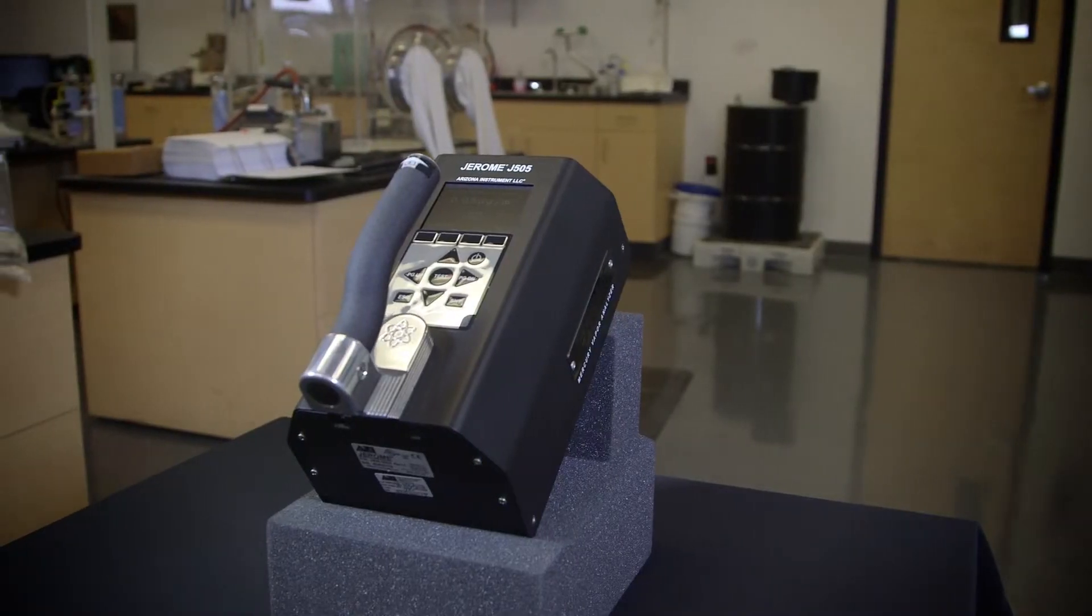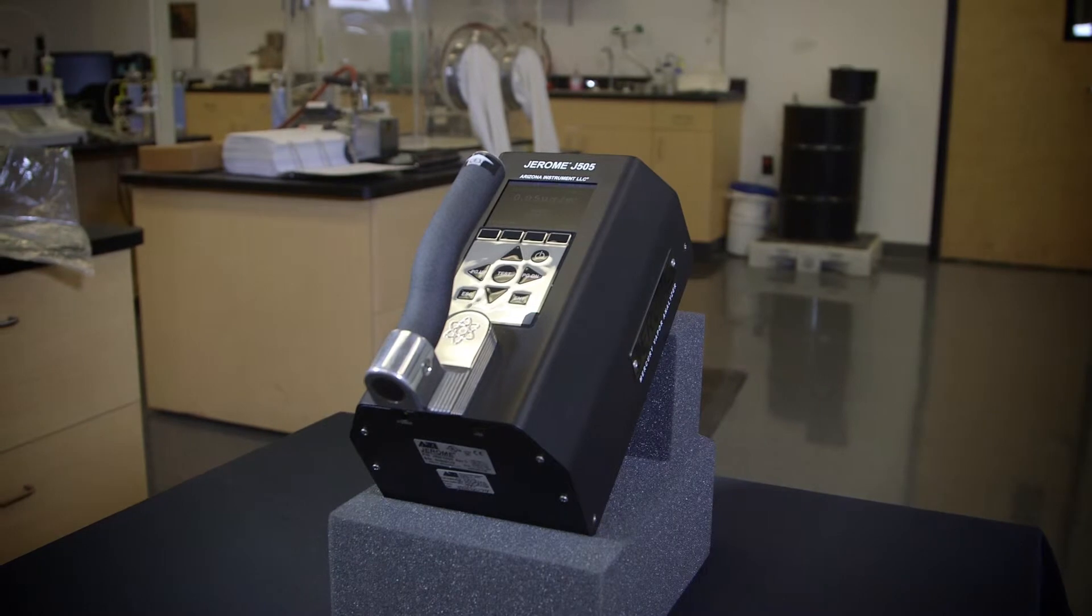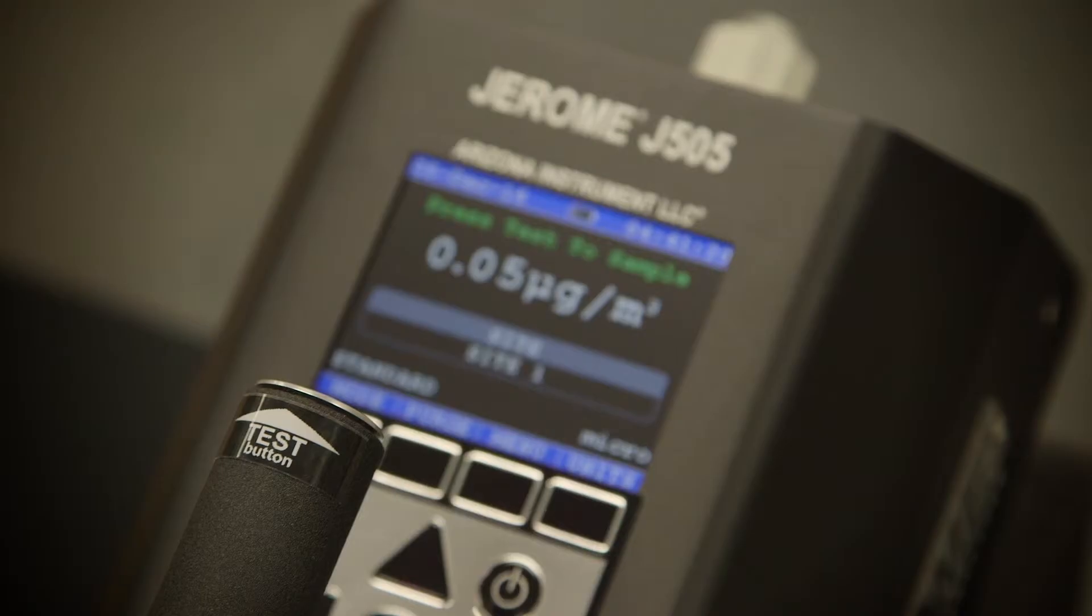Because the J505 uses atomic fluorescence to detect mercury, no regenerations or downtime are required. It features a color display and an easy-to-use menu system with a battery life of more than 10 hours.